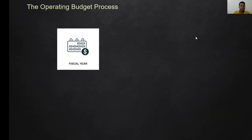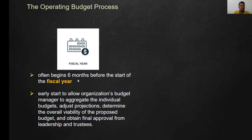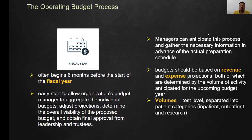Third, the operating budget management. The operating budget process is done in a fiscal year or financial year and often begins six months before the start of the financial year. This early start allows the organization's budget manager to aggregate individual budgets, adjust projections, determine the overall variability of the proposed budget, and obtain final approval from leadership and trustees. This process consumes time, which is why it is advisable to start as early as six months before. Managers should gather the necessary information in advance of the actual preparation schedule.